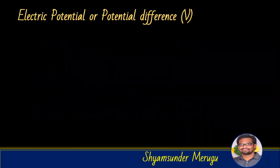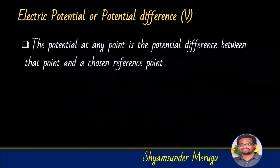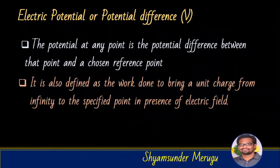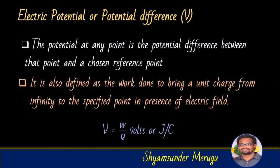Now coming to the definition of electric potential or potential difference. The potential at any point is the potential difference between that point and a chosen reference point. It is also defined as the work done to bring a unit charge from infinity to the specified point in the presence of the electric field. So we can write the potential as a ratio of work done to bring the unit charge Q from the reference point to the specified point, and the units will be volts or joules per coulomb.